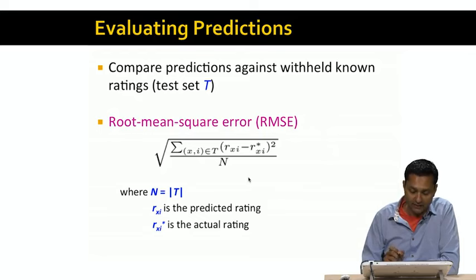And it's very simply defined as the sum of the squares of the deviations from the actual ratings and the predicted ratings. So in this case, R xi star is the actual rating for user x and item i. R xi is the rating that's predicted by our algorithm.